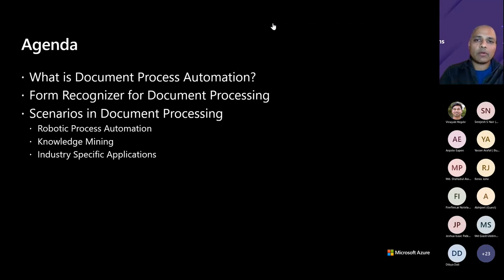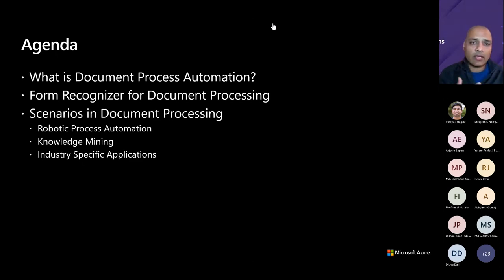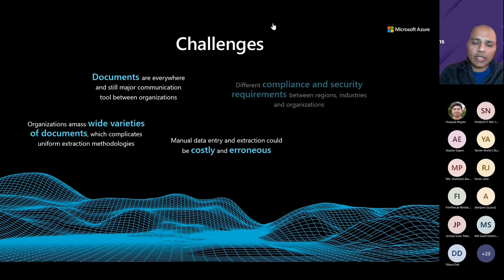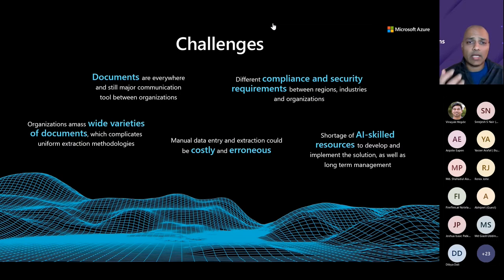I want to walk you through three core scenarios we see a lot of interest in. The first is Robotic Process Automation — processing large numbers of documents such as invoices in a procurement scenario, medical records in healthcare, or insurance claims in fintech. The second is knowledge mining, and the third is building a custom application that uses a custom model to extract insights from documents core to your business.